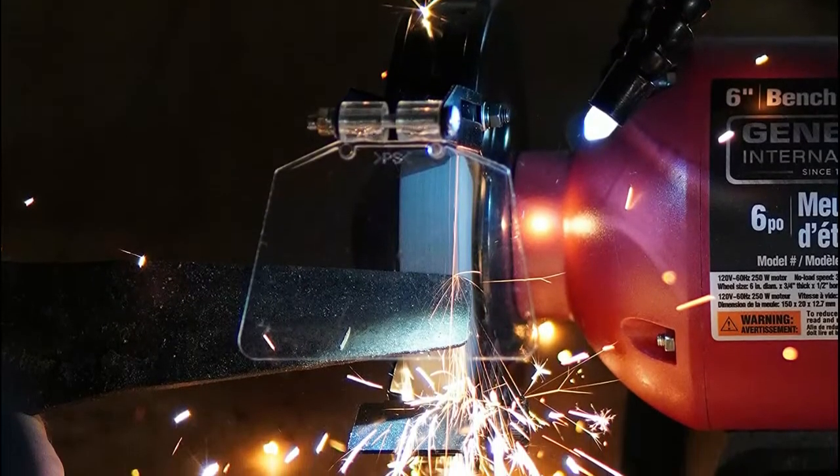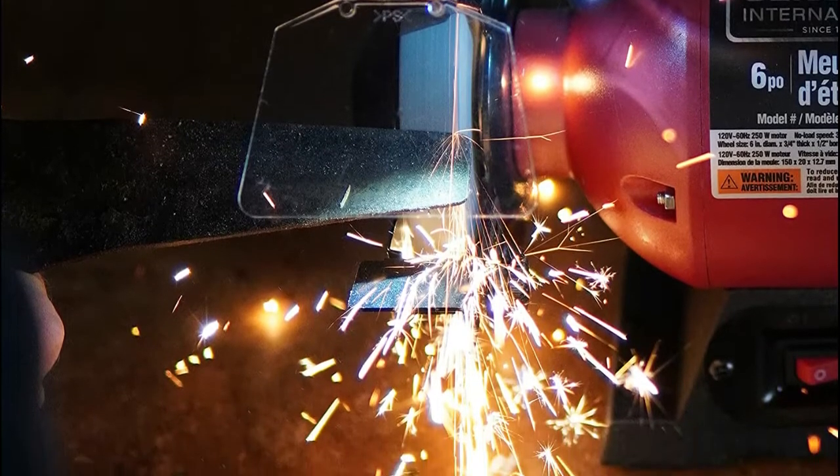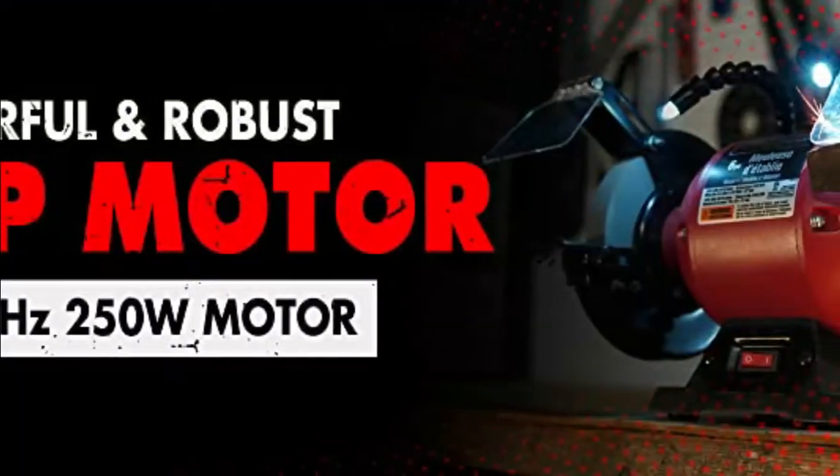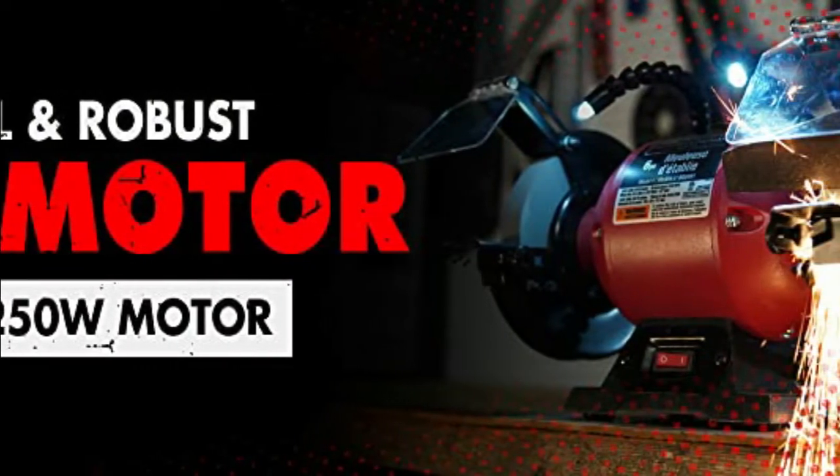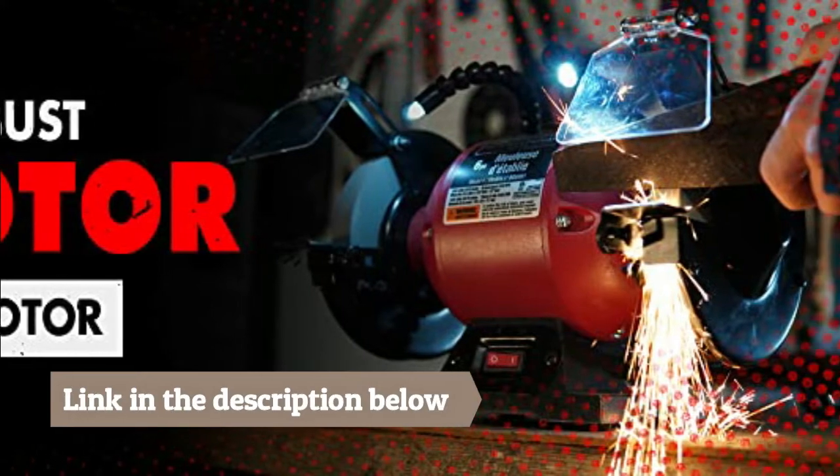With a cast iron base and full metal construction, this 19lb GI grinding workhorse is engineered for durability and longevity. This dual wheel bench grinder features two 6 x 3/4 inch grindstones, one fine and one coarse, making it ideal for everything from sharpening lawn mower blades to rust removal.